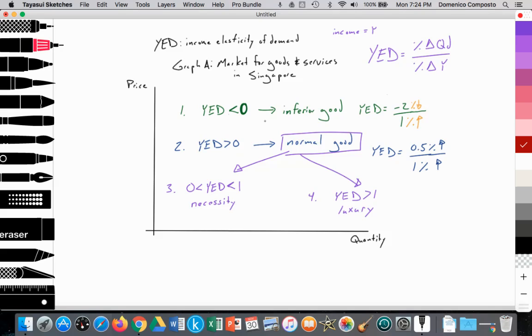Let's go over that quickly again. If YED is less than zero, it's an inferior good. As your income is rising, you're switching away from that product. Perhaps your income is rising. Instead of taking public transportation, you now buy a car. So the public transportation would be considered the inferior good because you've now switched over to a car.